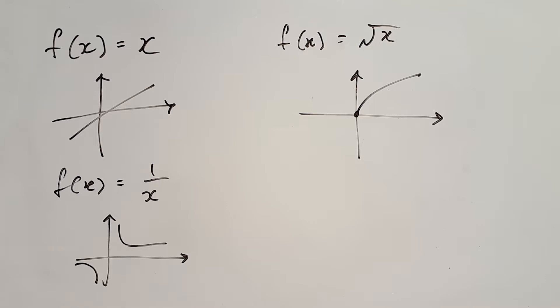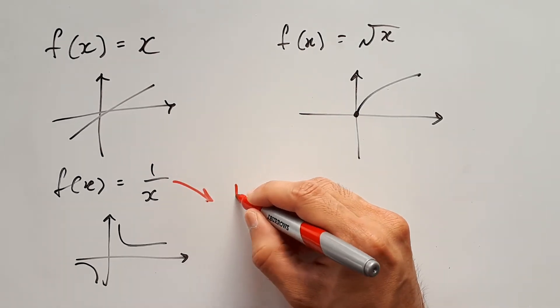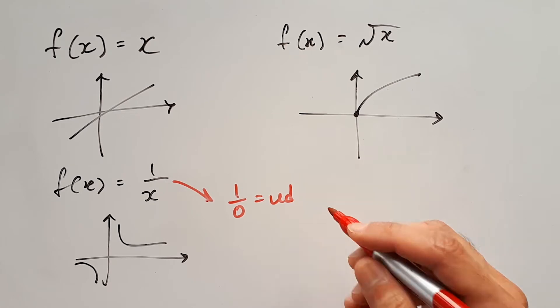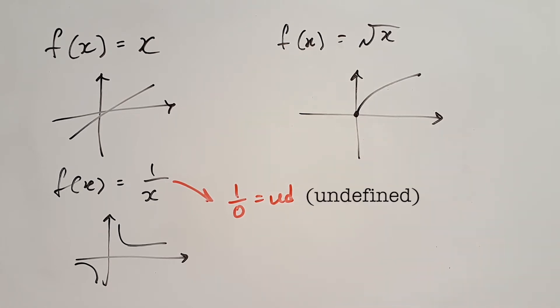In the case of 1 over x, if you let x equal 0, 1 divided by 0 does not yield anything. There is no answer, so we would say it's undefined.